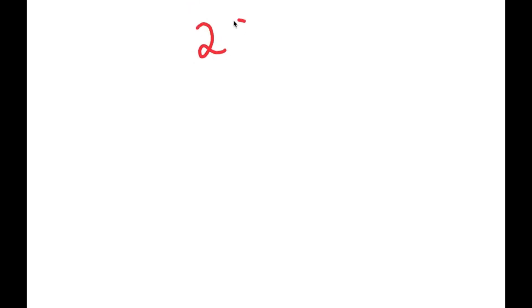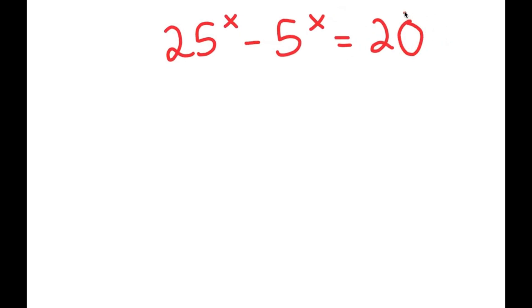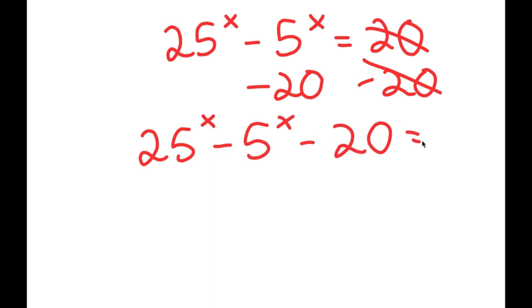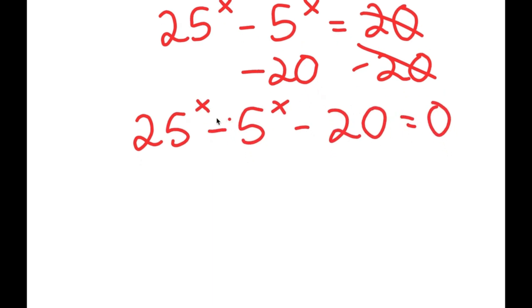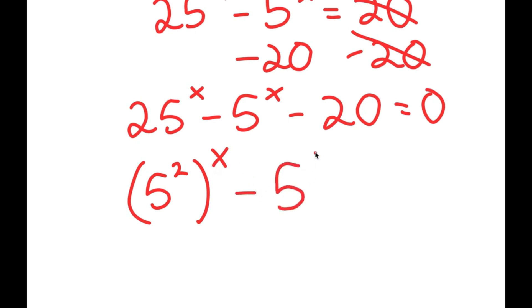In this problem, I'm solving 25 to the power of x minus 5 to the power of x equals 20. To solve this, I first subtract 20 from both sides, giving 25^x minus 5^x minus 20 equals 0. Then I rewrite 25^x as 5 squared to the power of x, so I have 5 squared to the power of x minus 5 to the power of x minus 20 equals 0.